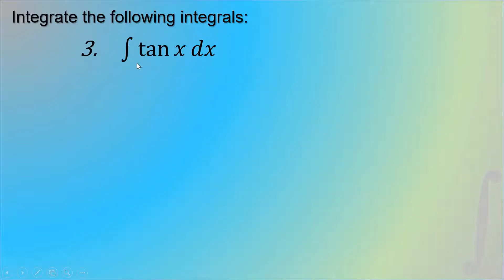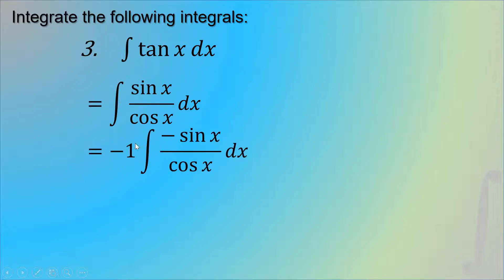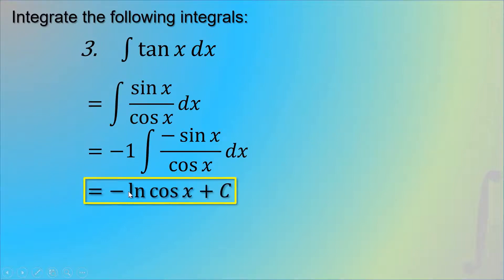The third example is the integral of tangent x dx. Since tangent x equals sine x over cosine x, we differentiate the denominator cosine x to get negative sine x. We place negative sine x in the numerator and multiply the integral by negative 1. That gives negative 1 times the integral of negative sine x over cosine x dx. Using the natural logarithm, the result is negative ln of cosine x plus C.